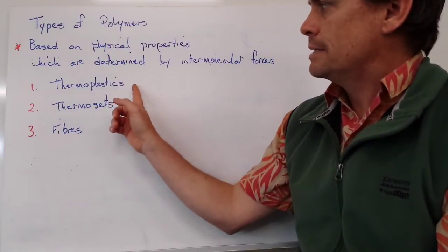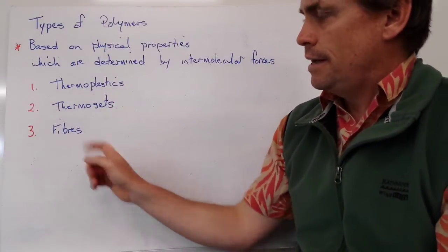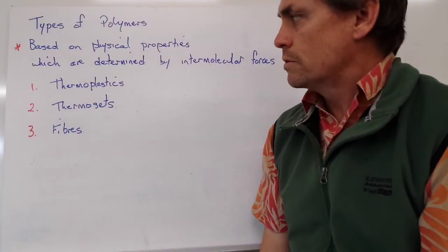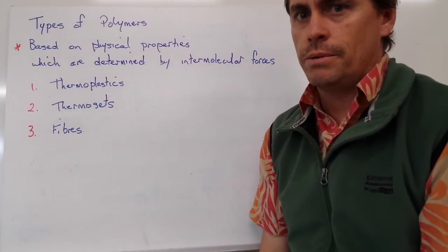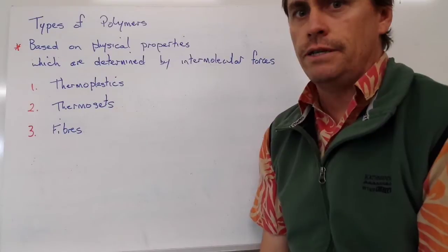We have three groups of polymers: thermoplastics, thermosets, and fibres. All three have different physical properties and therefore can be used for different purposes.